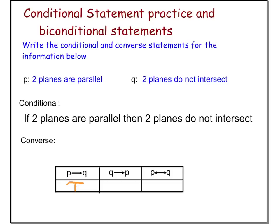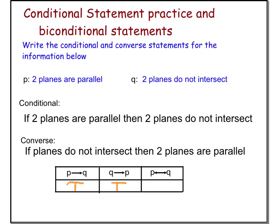Now pause the video and you write the converse. So the converse is switched. You write the Q part of the statement first and the P part of the statement second. If two planes do not intersect, then two planes are parallel. And that statement is true.